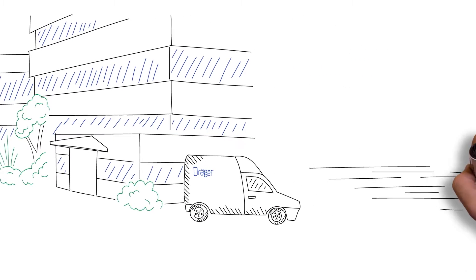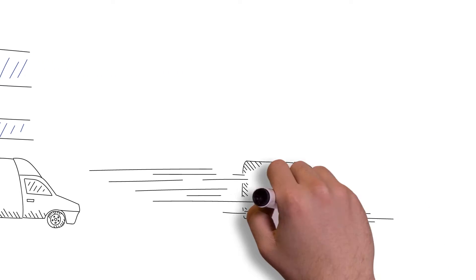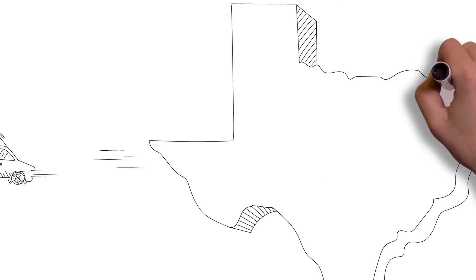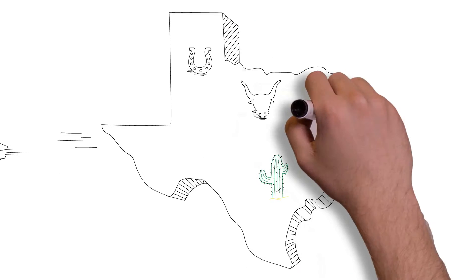So when the second largest chemical company in the world needed a solution to strengthen worker safety and increase productivity at its Freeport, Texas plant, it turned to Draeger.